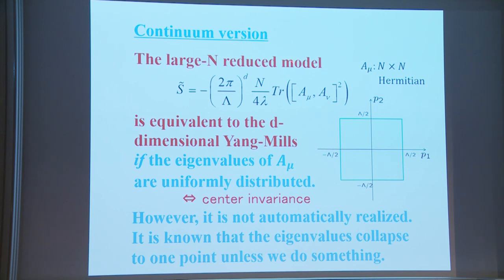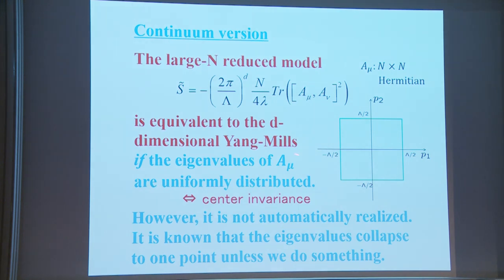The continuum version of the large-N reduced model can also be considered. Here we have N×N Hermitian matrices instead of U1, and the action is just a commutator squared with some coupling and weight. The statement is this model is equivalent to the d-dimensional Yang-Mills theory if the eigenvalues of A_μ are uniformly distributed. This is essentially equivalent to the center invariance condition. However, it is not automatically realized — it is known that the eigenvalues collapse to one point unless we do something.